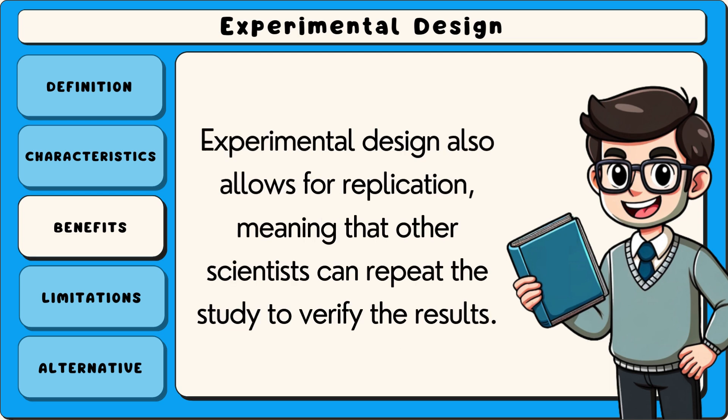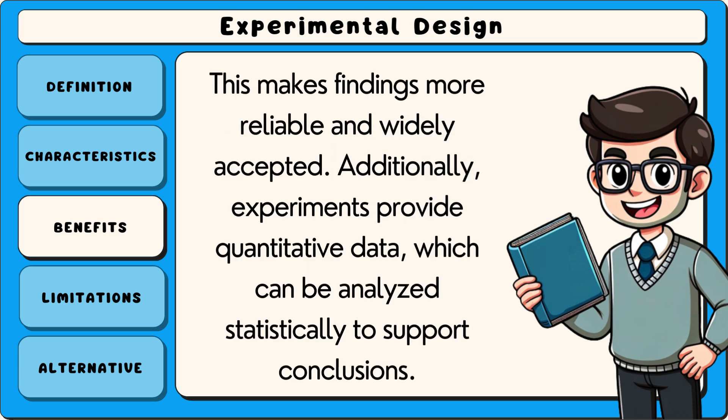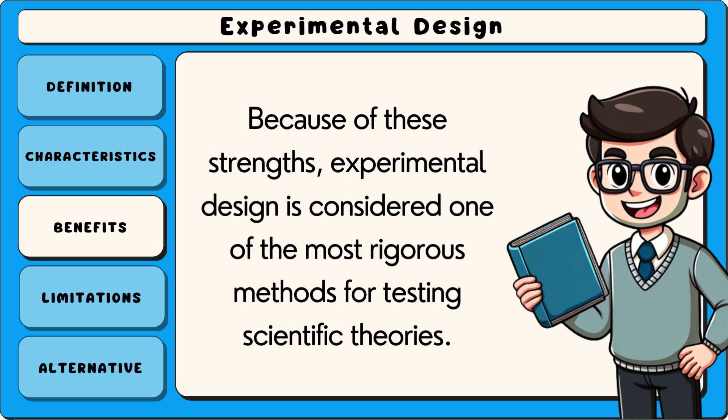Experimental design also allows for replication, meaning that other scientists can repeat the study to verify the results. This makes findings more reliable and widely accepted. Additionally, experiments provide quantitative data, which can be analysed statistically to support conclusions. Because of these strengths, experimental design is considered one of the most rigorous methods for testing scientific theories.